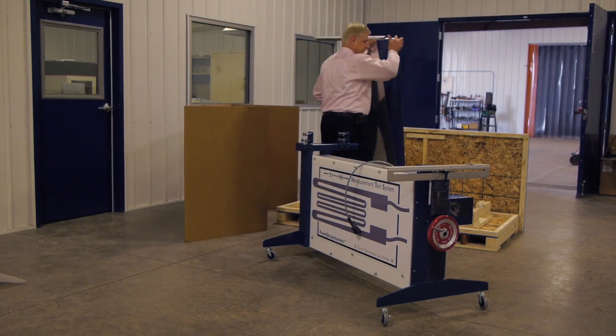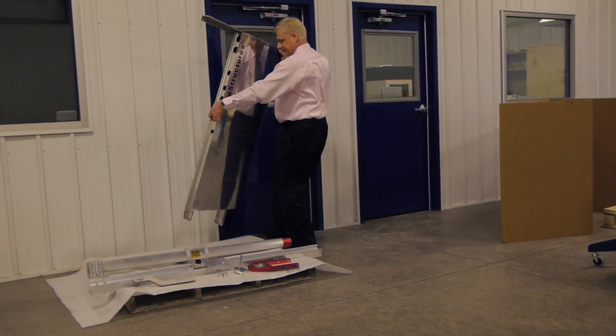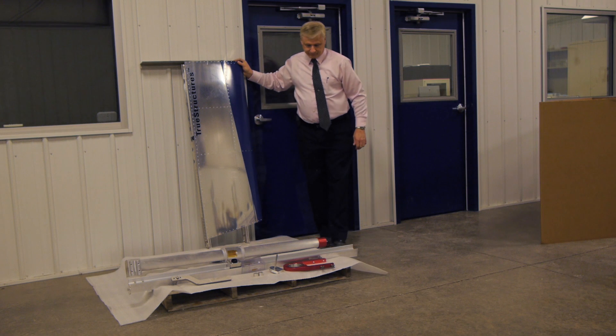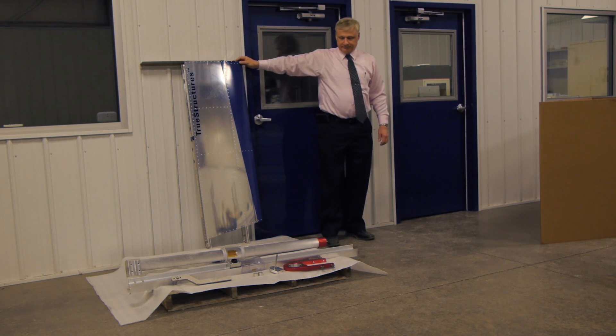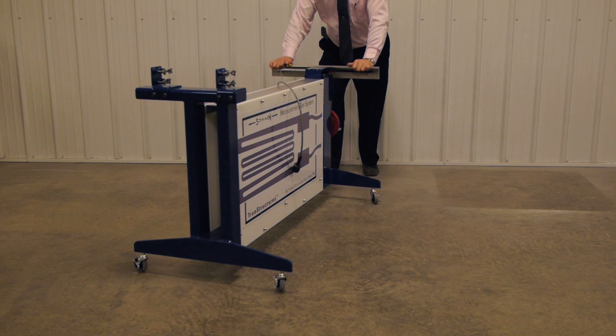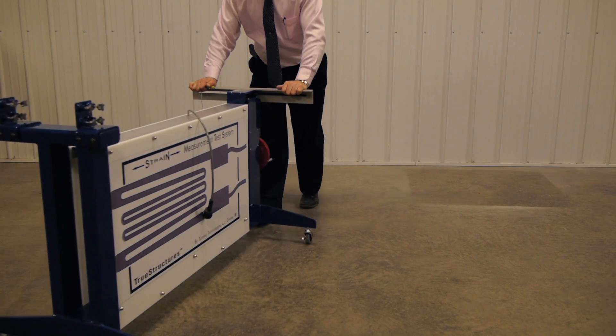TrueStructures is a portable, self-contained structural analysis system that can be easily integrated into any lab space. It arrives fully assembled and ready to operate, with only an electric receptacle needed. Its durable, powder-coated main support frame is made from structural steel tubing and mounted on rolling casters for mobility.